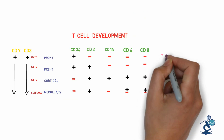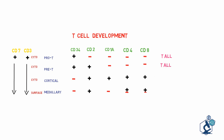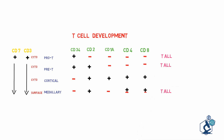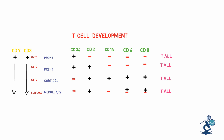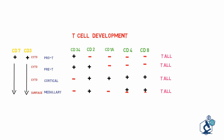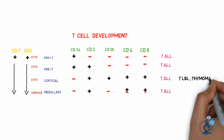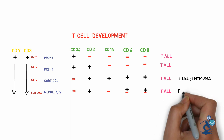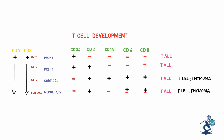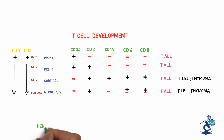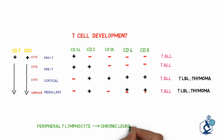T acute lymphoblastic leukemia can originate from all four stages and is classified on the basis of cell of origin into pro T, pre T, cortical T, and mature T cell acute lymphoblastic leukemia. T lymphoblastic lymphoma and thymoma originate from cortical and medullary T cells. Peripheral mature T lymphocytes circulate in the peripheral blood and reside in lymph nodes, giving rise to all peripheral chronic leukemias and peripheral T cell lymphomas.